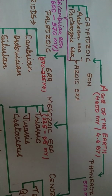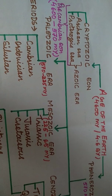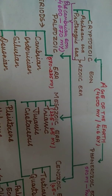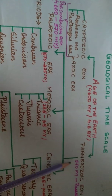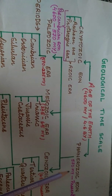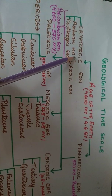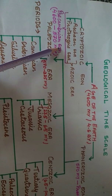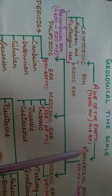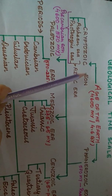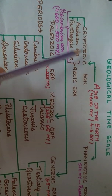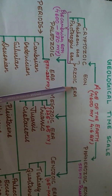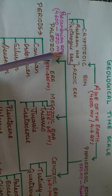The 4600 million years has been divided into two eons: Cryptozoic Eon and Phanerozoic Eon. Cryptozoic Eon is also called Pre-Cambrian Eon. These eons are then divided into eras. Cryptozoic Eon is divided into Archean Era and Proterozoic Era, which together can be called the Azoic Era.